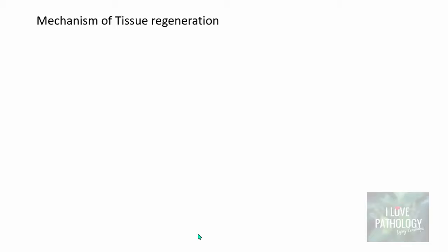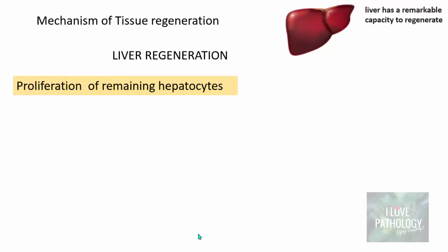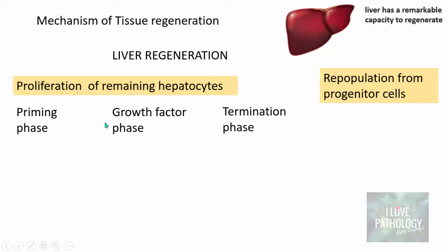Let us understand tissue regeneration in detail, taking the liver as an example, because the liver has a remarkable capacity to regenerate. Liver regeneration occurs via two pathways. For example, if you remove part of the liver in partial hepatectomy, the remaining liver starts proliferating. One way the liver regenerates is by proliferation of remaining hepatocytes, and two is repopulation from progenitor cells — stem cells. Proliferation of remaining hepatocytes occurs in three phases: a priming phase, a growth factor phase, and a termination phase.